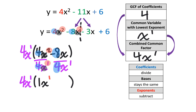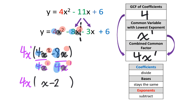Negative 8 divided by 4 gives us negative 2. Next, bases stay the same, so the variable x stays the same. And exponents get subtracted — there is a hidden 1, subtracted by 1, which gives us 0. We can clean this up: remove the exponent of 1, the exponent of 1, the coefficient of 1, and x to the power of 0 disappears.